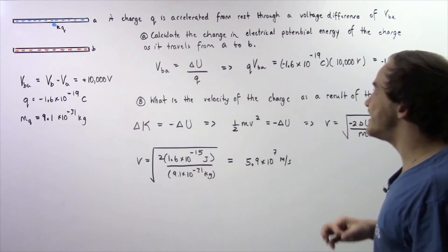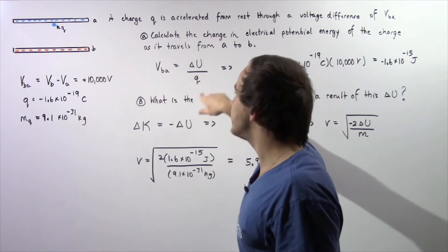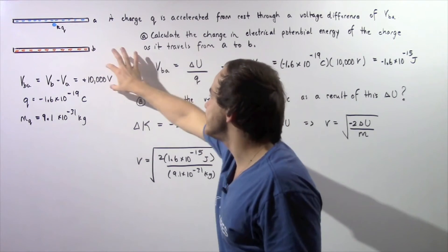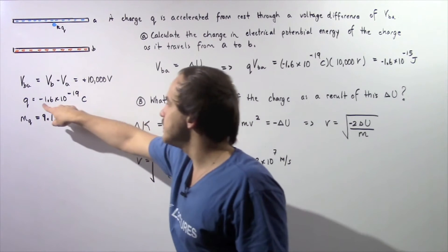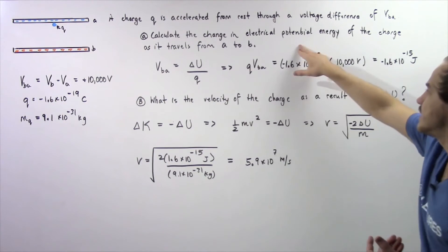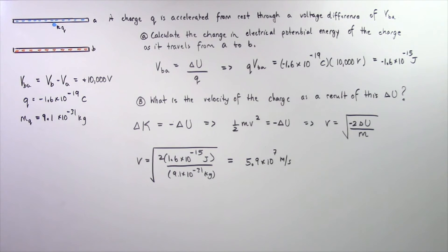The change in U is equal to the product of VBA and Q. VBA is 10,000 volts and Q is negative 1.6 times 10 to the negative 19 coulombs. Multiplying these gives negative 1.6 times 10 to the negative 15 joules.